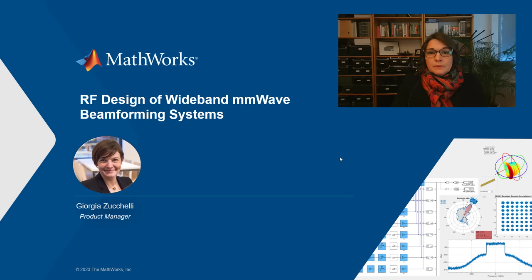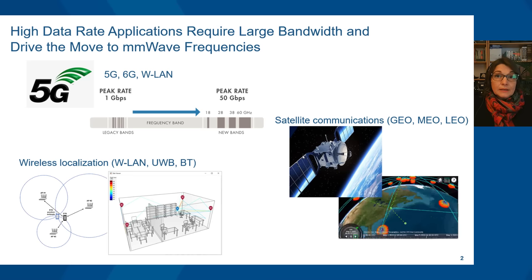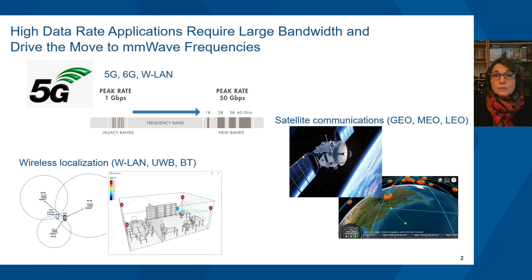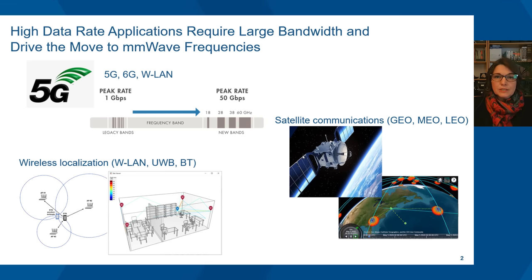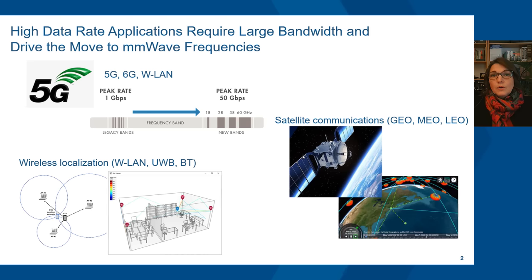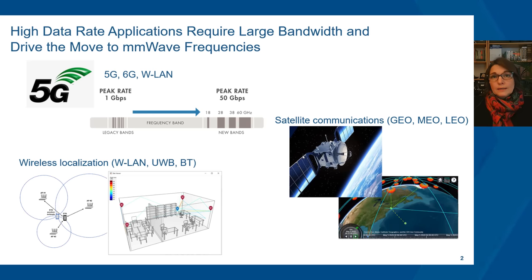So why are we talking about millimeter wave systems? Communication systems are driven to provide higher and higher data rates, and one way to do that is to use signals with larger bandwidth. One way to support larger bandwidth is to move the center frequencies to the millimeter wave range — the double-digit gigahertz range. We see this with the FR2 bandwidth provided by 5G and even more extreme trends for 6G, in satellite communication systems using complex modulations such as DVB-S2X or 5G for non-terrestrial applications, and also in wireless localization systems that require wider bandwidth for improving location accuracy.